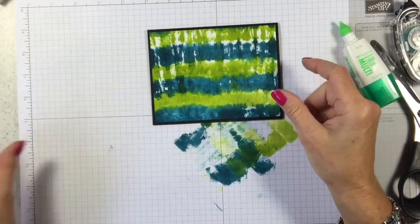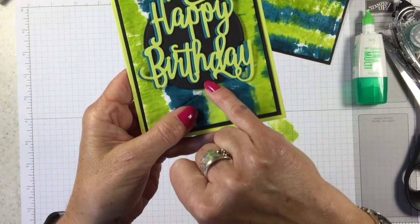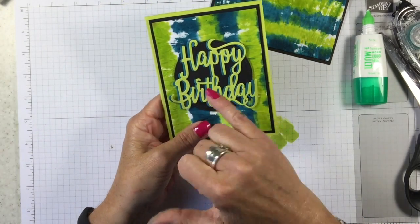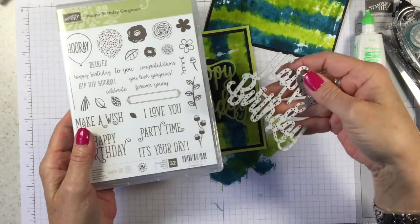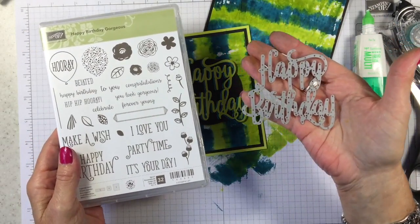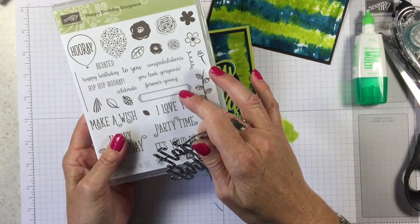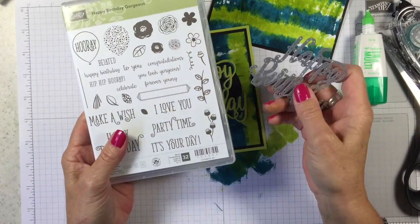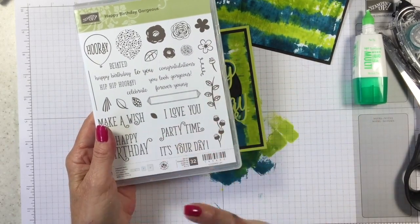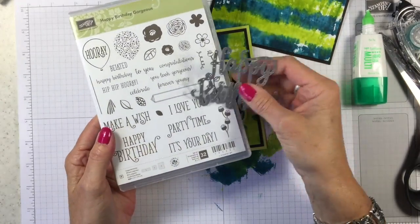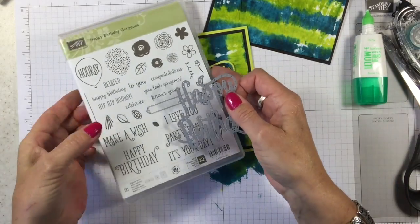Okay so this is what I came up with. I took one of our Stitched Shapes Framelits, it's got the little stitching around there, I hope you can see that. I took one of our stitched framelits and I mounted that on dimensionals. And then this Happy Birthday is coming from the Happy Birthday Gorgeous bundle. You get this particular die as a bundle with the stamp set, love the stamp set. And I have a gazillion cards I'm going to show you with the stamp set. I hosted a bundle swap using this and I have 24 different cards and they're all very very different and I love that.